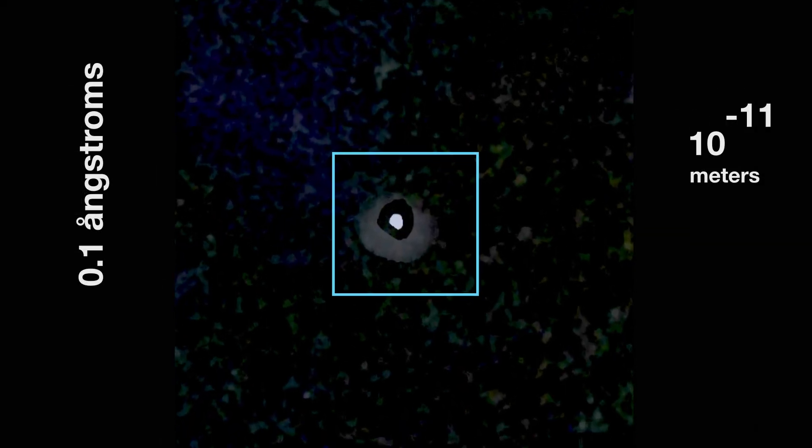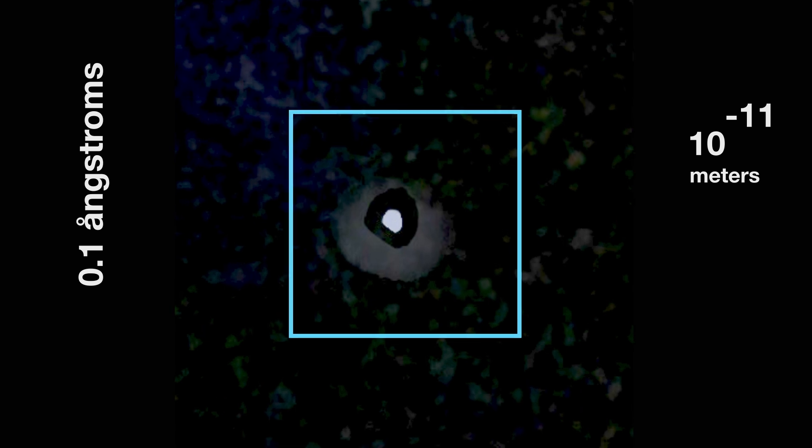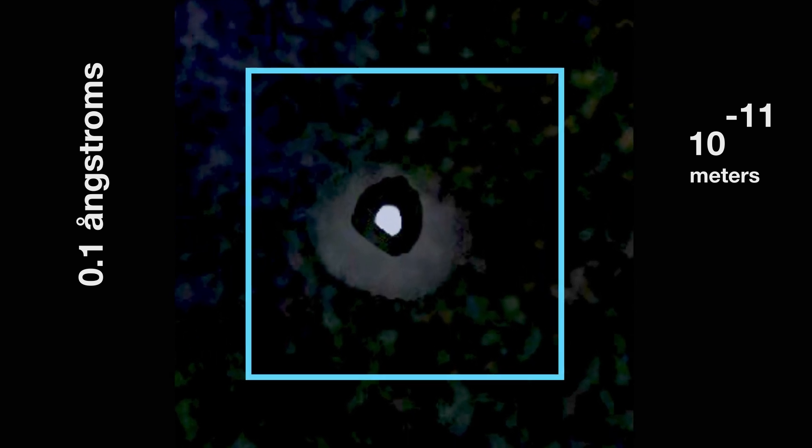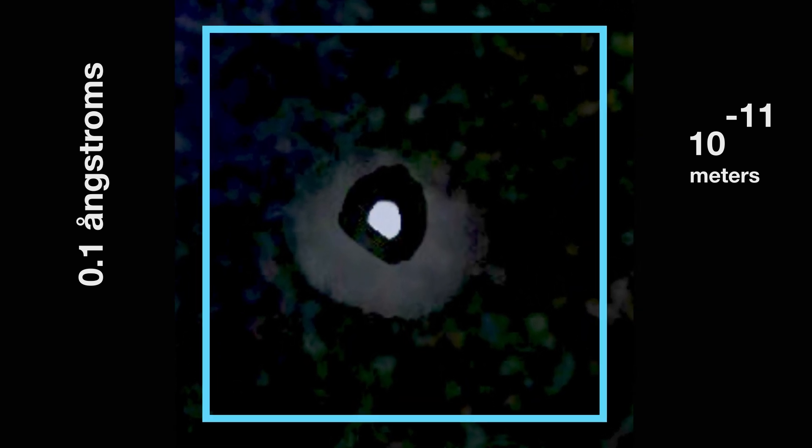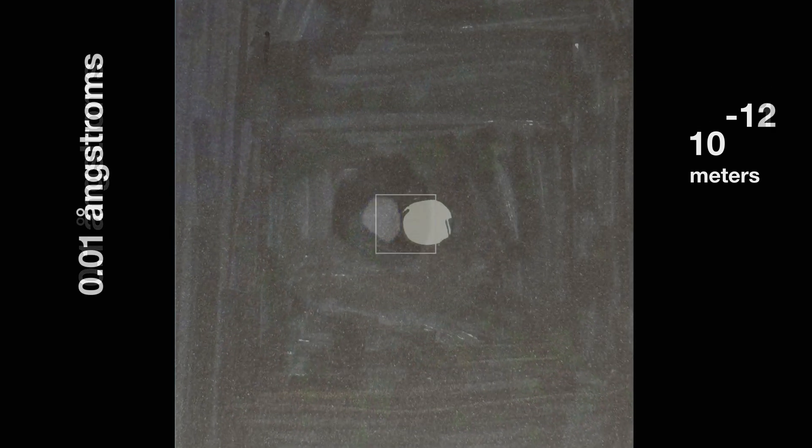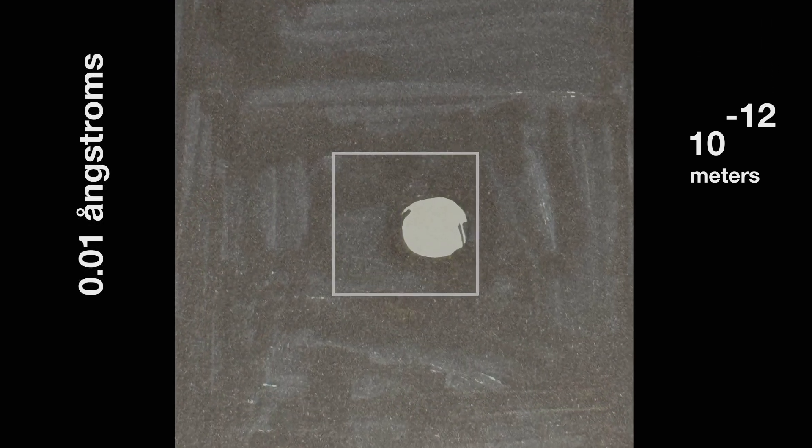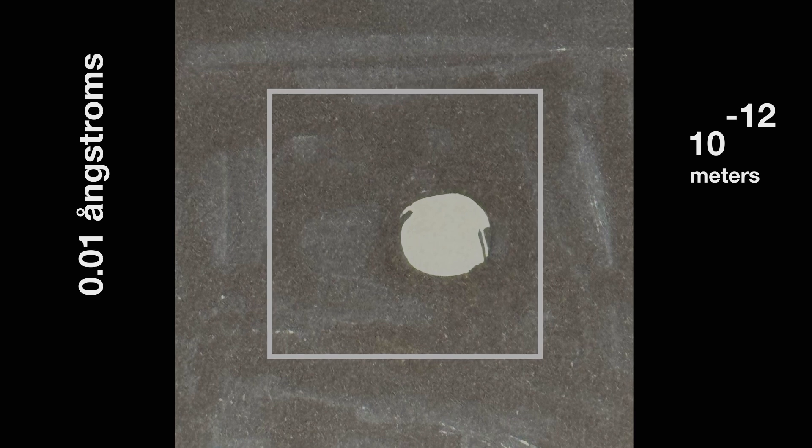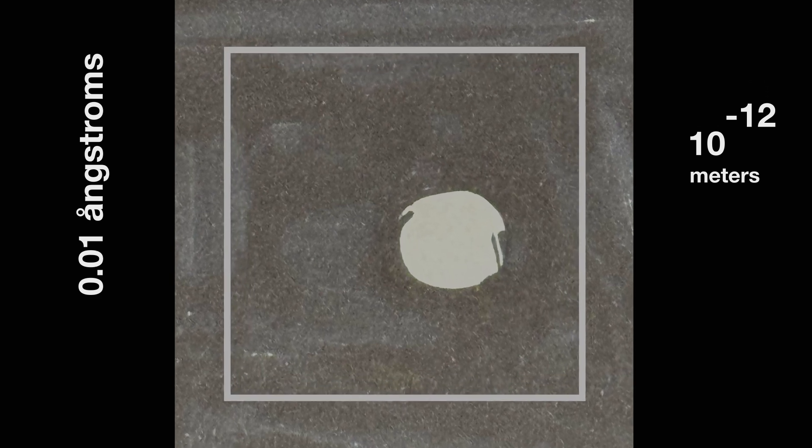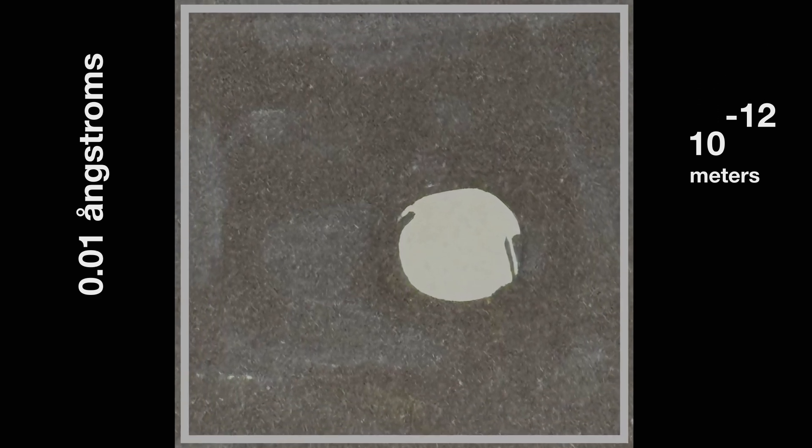Now we come upon the 0.1 angstroms, the realm of subatomic particles, as we draw to the atom's attracting center. The nucleus is often referred to as the control center of the cell. It plays a vital role in various cell functions. It houses the DNA, which contains the blueprint for cell structure and activities.